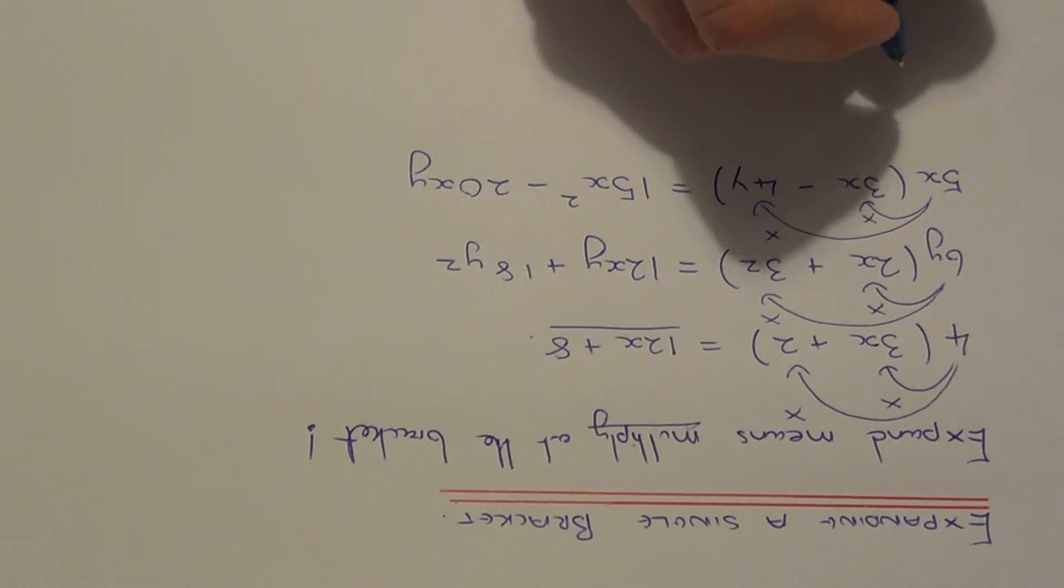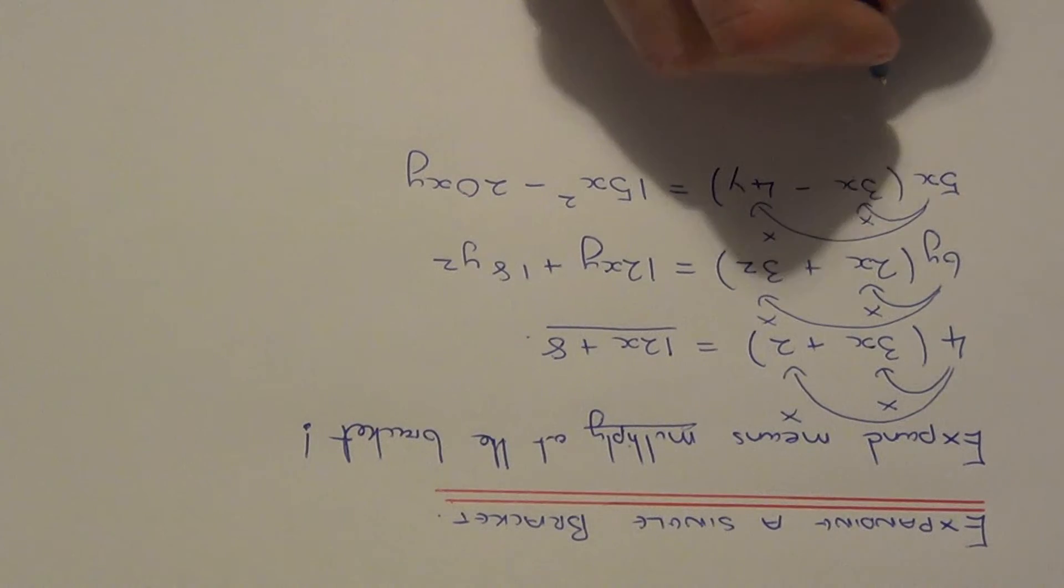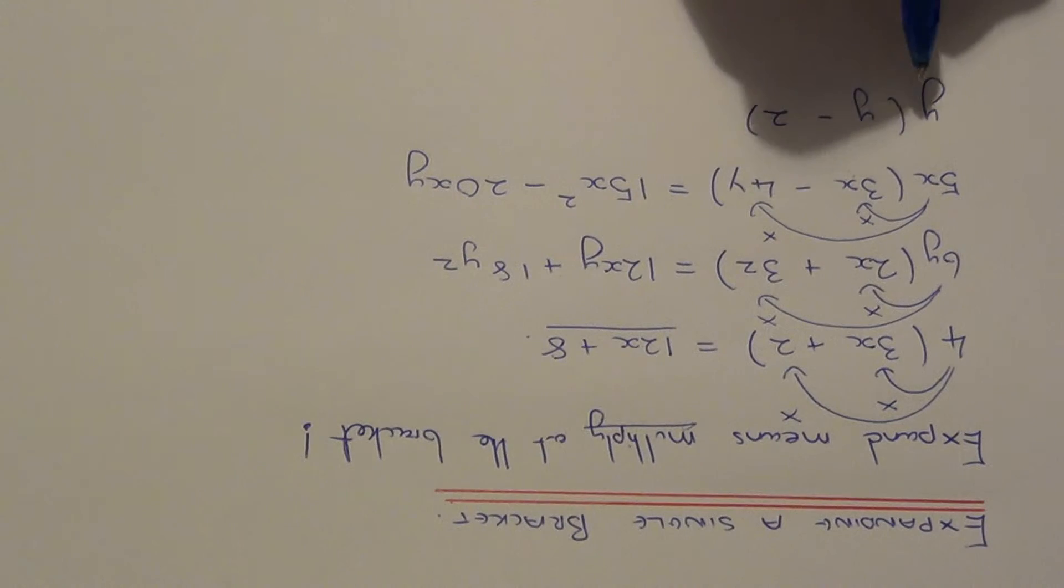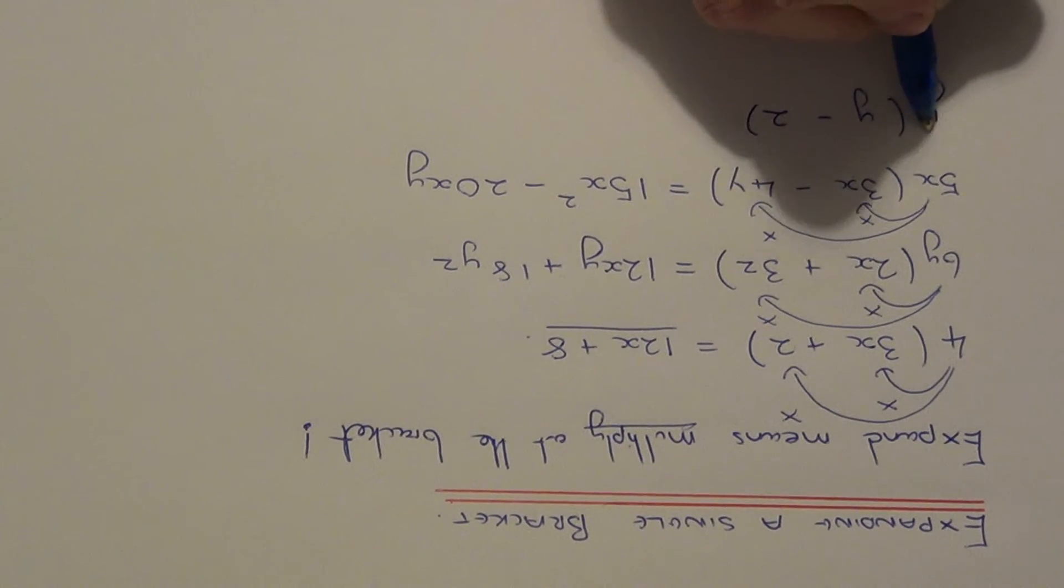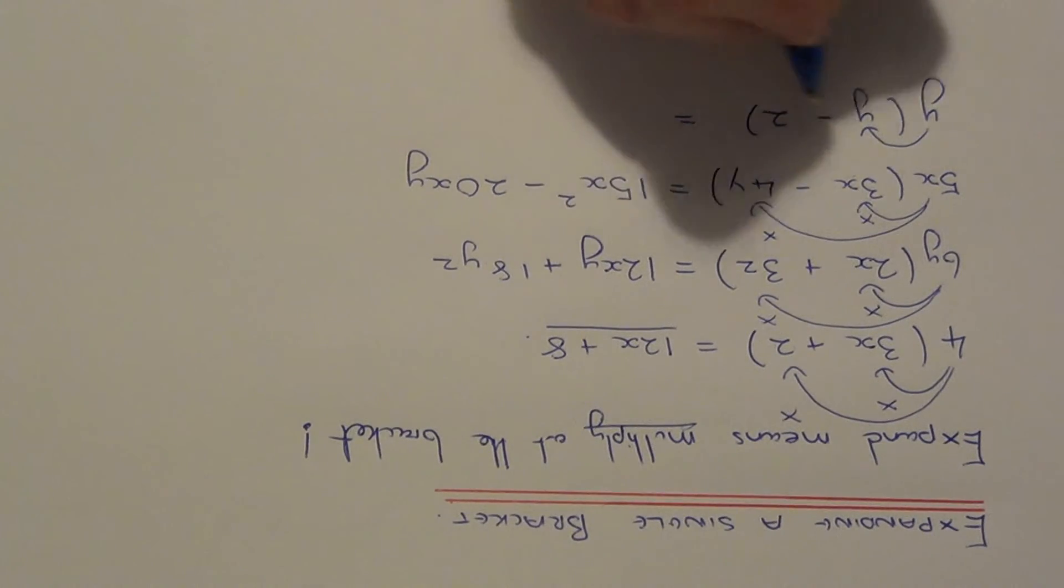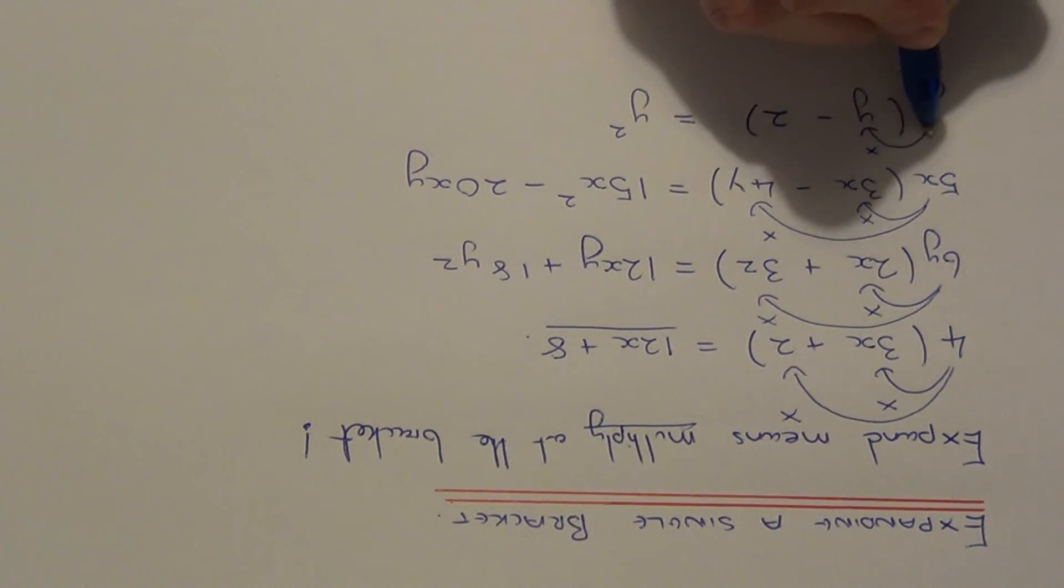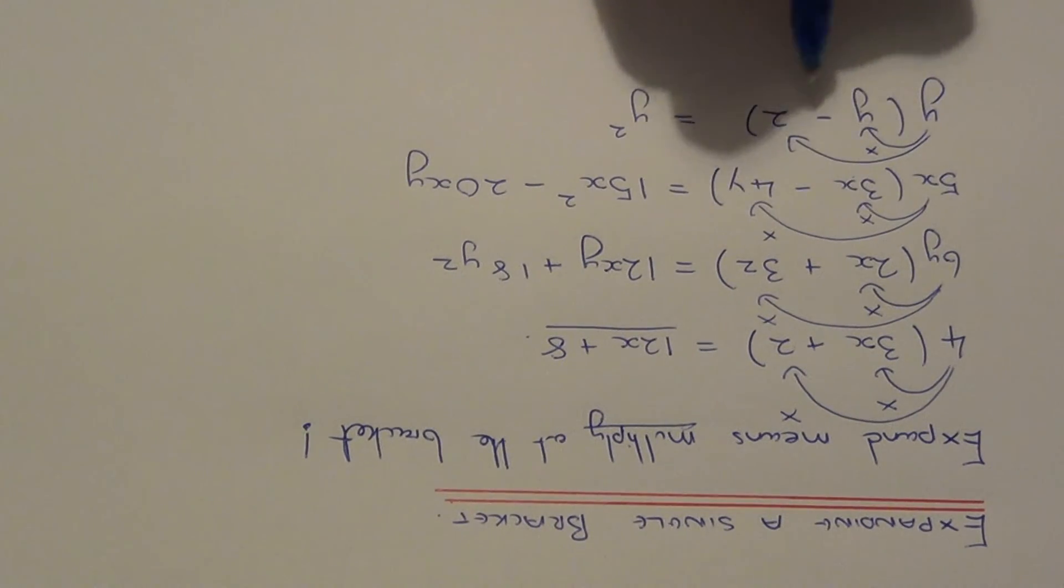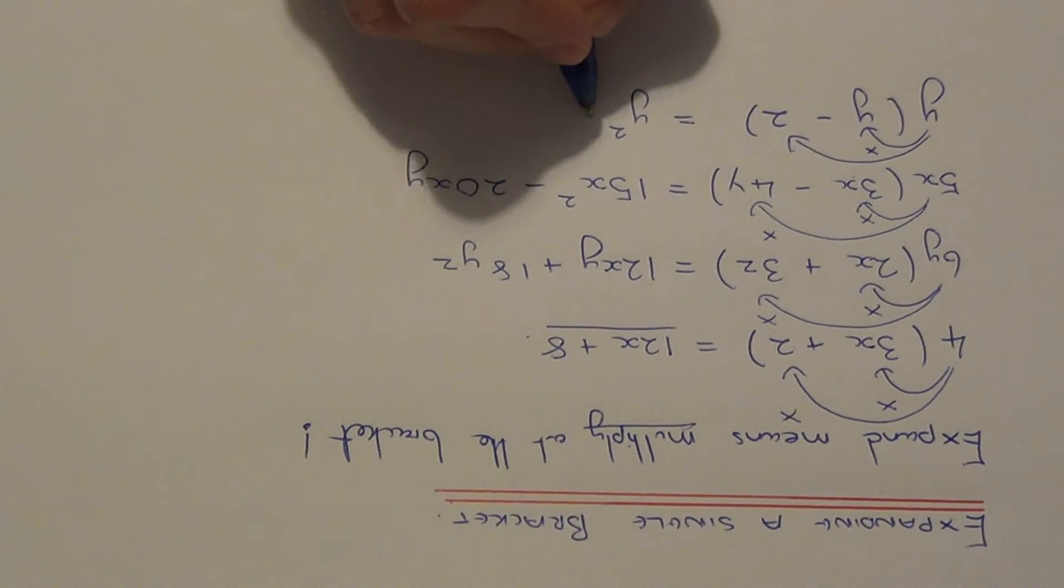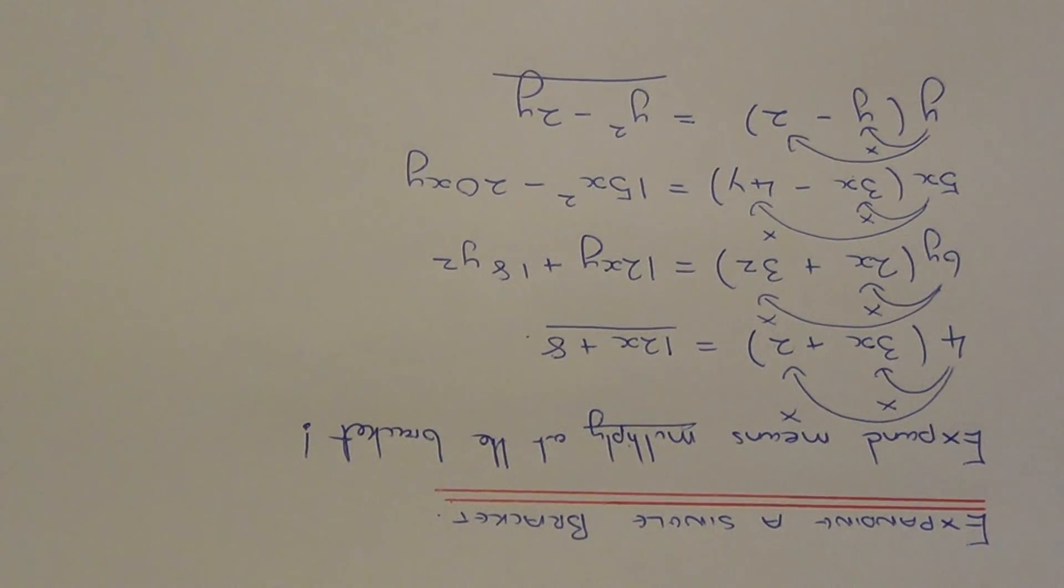Let's do one final example. So let's expand y bracket y minus 2. So again the y at the start of the bracket has to multiply both terms inside. So first of all do y times y. Y times y will be y squared. And then do y times minus 2. This will be minus 2y. So y squared minus 2y is the final answer.